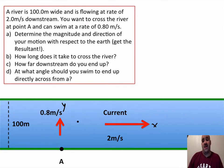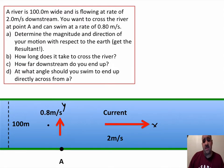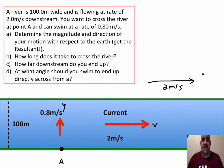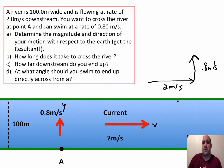The first question asks us to determine the magnitude and direction of your motion with respect to the Earth, so we're going to get a resultant. If you swim directly across the river while the current pulls you downstream, you'll end up somewhere downstream. We use tail-to-tip: start with the 2 m/s downstream vector, then attach the tail of the 0.8 m/s crossing vector to the tip of the first vector, and draw the resultant from the tail of the first to the tip of the last.